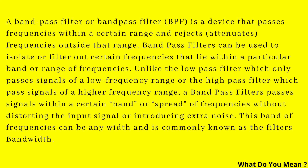Unlike the low-pass filter which only passes signals of a low frequency range, or the high-pass filter which passes signals of a higher frequency range, a bandpass filter passes signals within a certain band or spread of frequencies without distorting the input signal or introducing extra noise. This band of frequencies can be any width, and is commonly known as the filter's bandwidth.